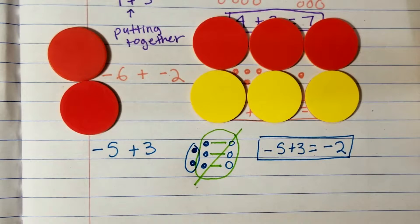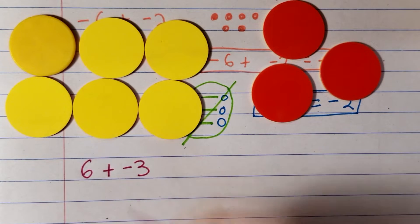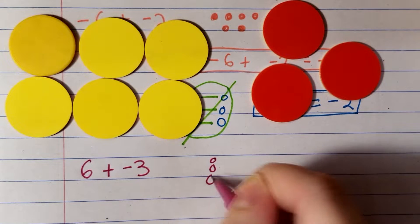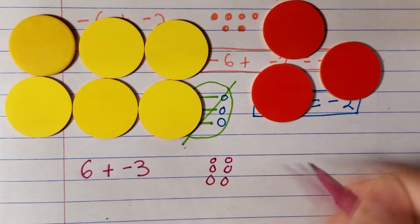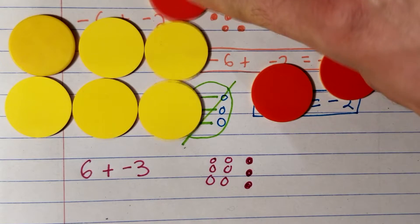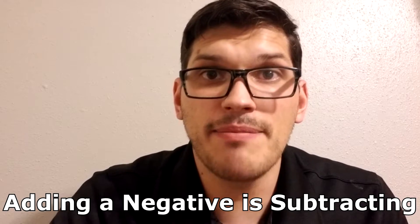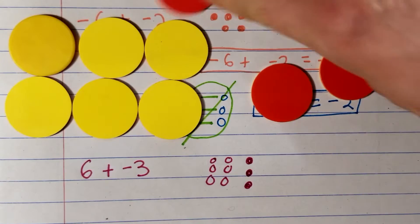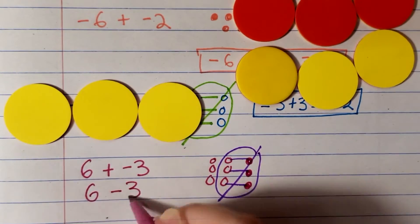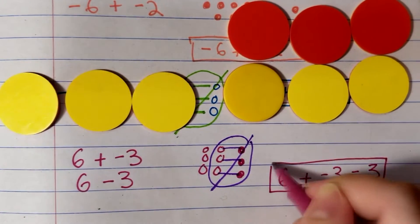One more addition example. Six plus negative three. Notice we have more yellow, which means the answer will be positive. In the last video, we would have circled the plus sign and negative sign and turned it into subtraction. Which you still could. It will be the same answer. Remember, adding a negative is the same as subtracting. So the three negatives will cancel out three positives and that will leave us with three positives. So six plus negative three equals three.